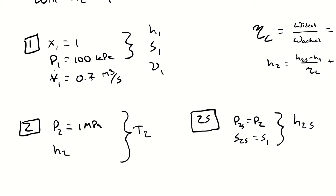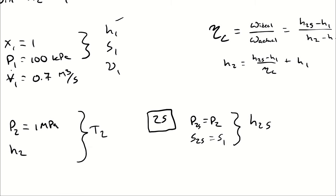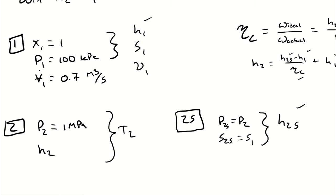Therefore, H2 is going to equal H2s minus H1 divided by eta to C plus H1. So, X1 and P1 give me H1, S2s equals S1, and P2 gives me H2s. Once I know those, I can determine H2, which I can then use to determine T2. That's my structure.